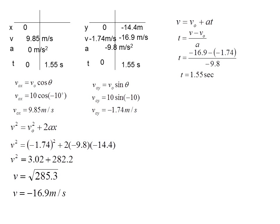From here, I can find the x displacement, or the range. And I'm going to use x equals v naught t plus one half a t squared. But, of course, acceleration is zero, so that second term drops out. Now, I can plug in, and I get 9.85 times 1.55. And I get an x displacement of 15.3 meters.